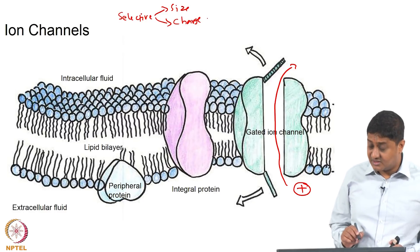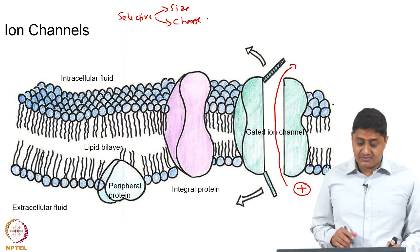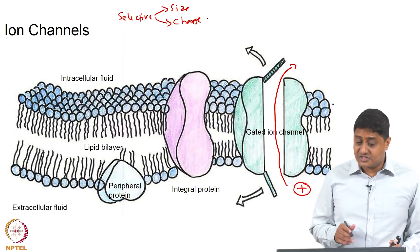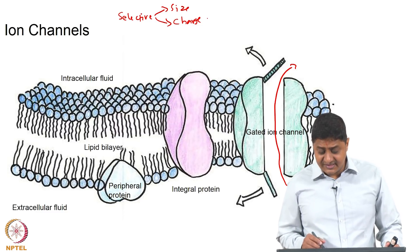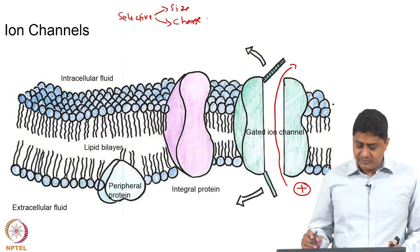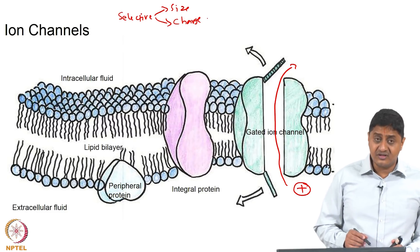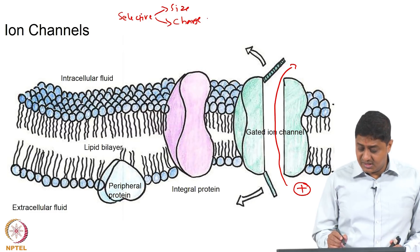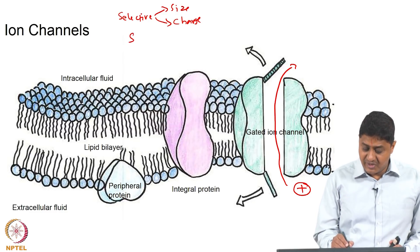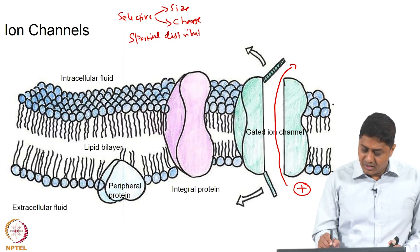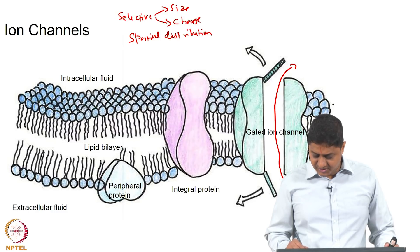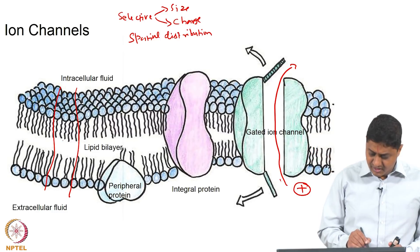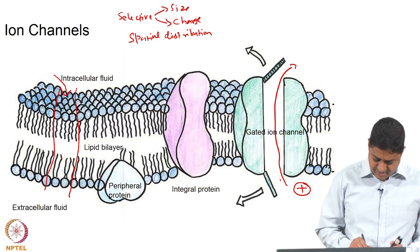Some channels may allow only cations; some channels may allow only sodium but not potassium; some channels may allow cations but not anions. Also note that these channels are distributed along the length of the plasma membrane. There is a spatial distribution of these channels — if this channel is open, then a different channel elsewhere may transport a different ion in a different direction.